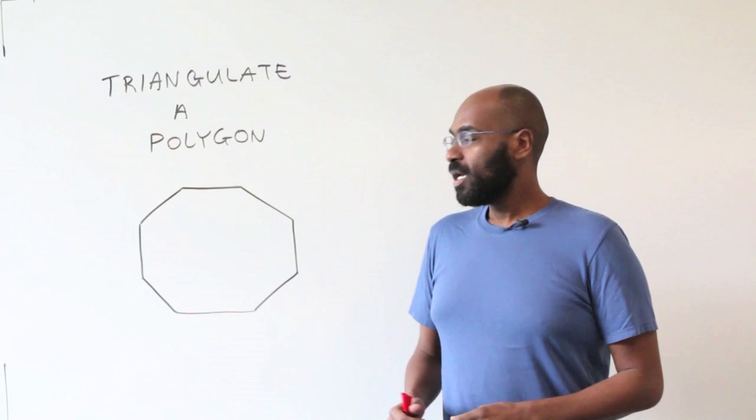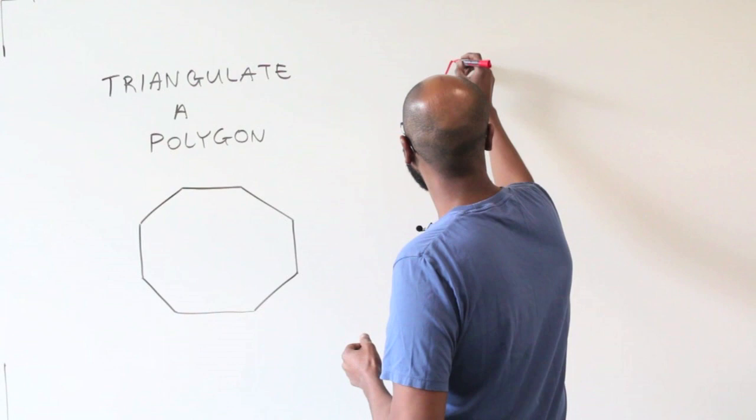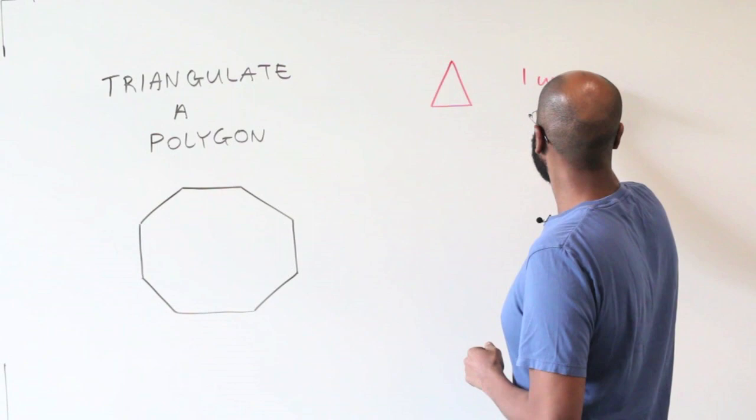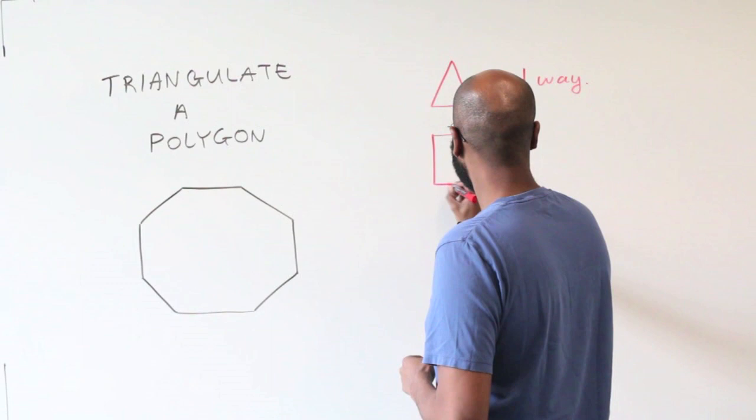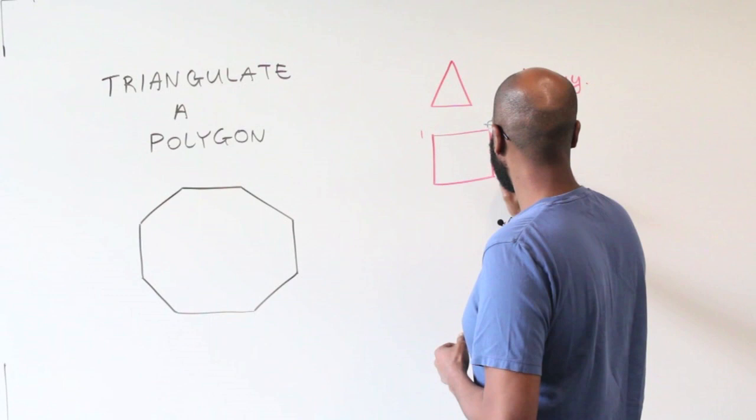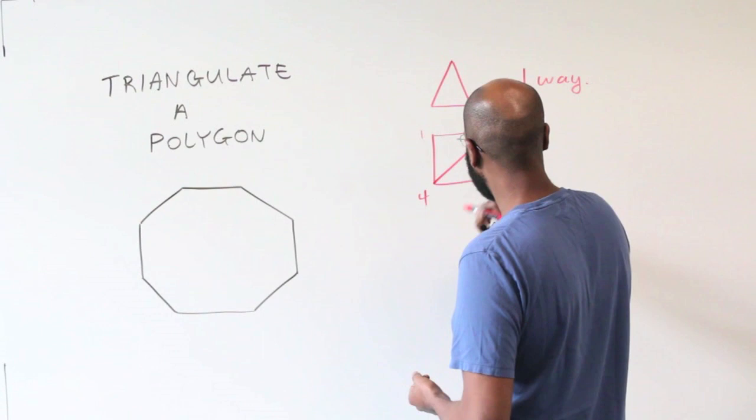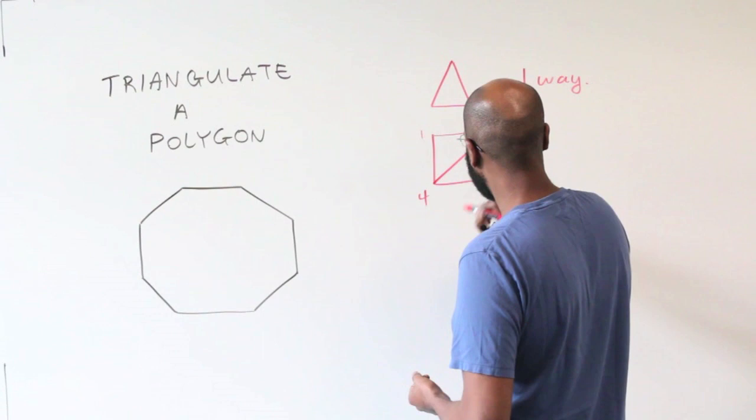To get a sense of this, let's start with some smaller polygons. First of all, if we start with a triangle, we know that there's only really one way to do this. If we start with a quadrilateral — something like a rectangle or any quadrilateral — and label the vertices 1, 2, 3, 4, then there are effectively two ways to triangulate: either split along the diagonal like this, or split along the diagonal like this. So two ways here.